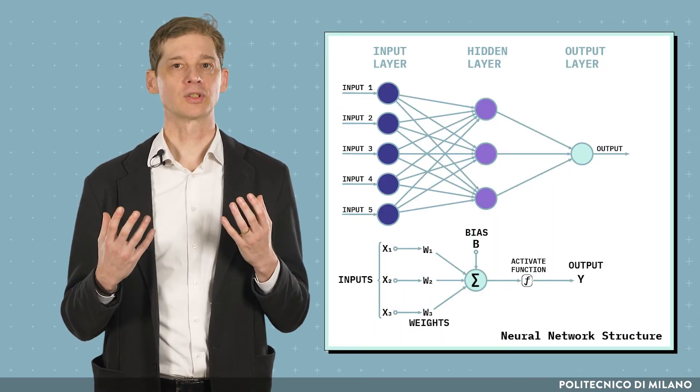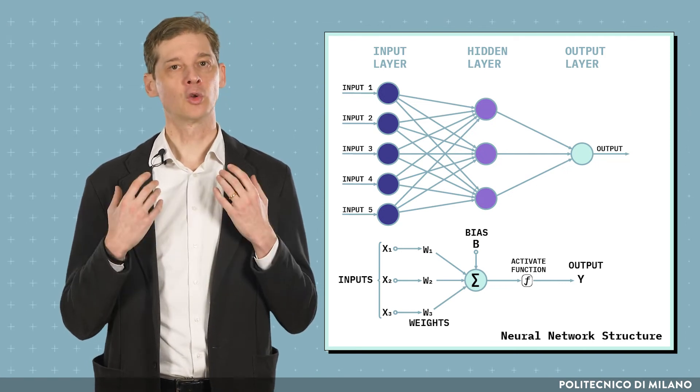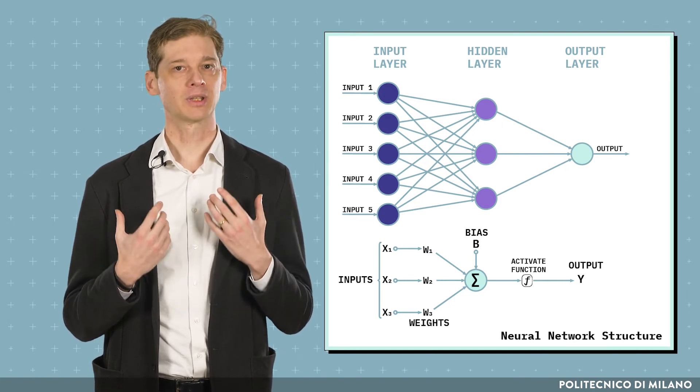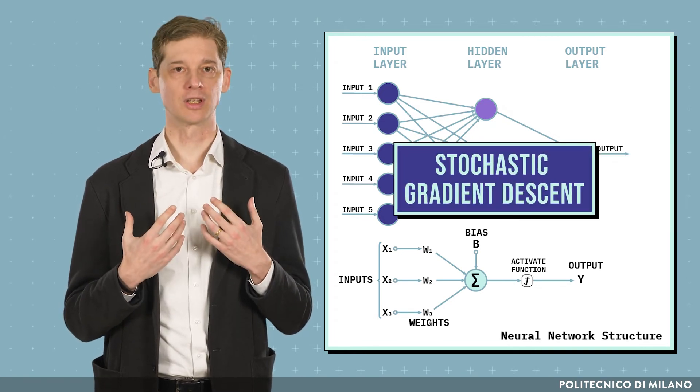They are non-linear parametric models that, starting from the raw input data, can automatically extract features useful for solving the task. Given the non-linearity of the parameters of a neural network, their optimization cannot be obtained in closed form, and usually is performed using stochastic gradient descent.